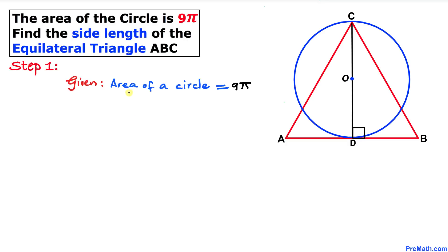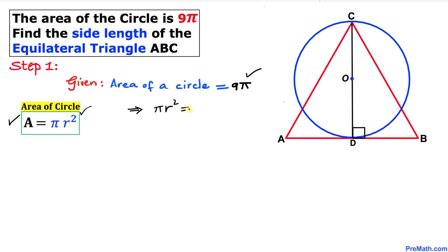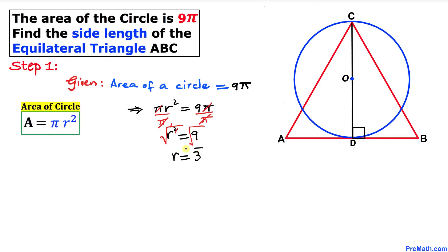Here's our very first step. We know that the area of this given circle is 9π. Recalling the area of a circle formula: A = πr². Comparing the two equations, we can write πr² = 9π. Dividing both sides by π to isolate r, we get r² = 9. Taking the square root on both sides, we get r = √9 = positive 3.